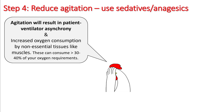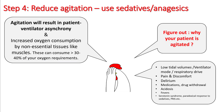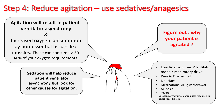The next step is to reduce agitation. Reducing agitation is very important. Agitation results in patient-vent asynchrony and increases oxygen consumption by non-essential tissues like muscles, which can in these circumstances consume up to 30 to 40 percent of the oxygen being absorbed. So figure out why your patient is agitated — there are various causes apart from pain and discomfort, so make sure you are looking to make the patient comfortable but don't miss other causes of agitation.